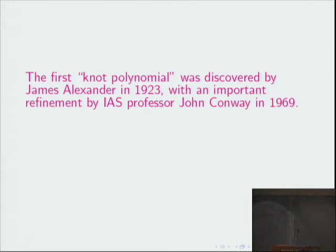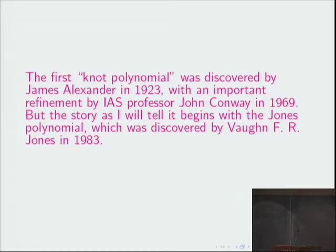Now, okay, I was actually asked while we were chatting before the seminar when knot theory got started. And okay, people wrote about knots in the 19th century, but by 1923, James Alexander defines an invariant of knots that mathematicians still study today, and an important refinement was made later by our former colleague here at the Institute, John Conway. But the story as I'll tell it begins with something called the Jones polynomial, which was discovered by Vaughan Jones in 1983.